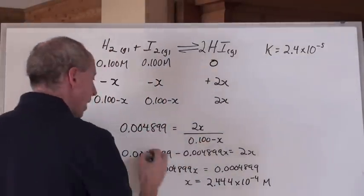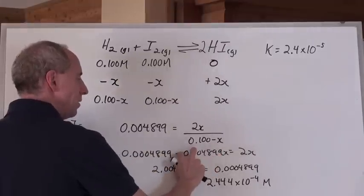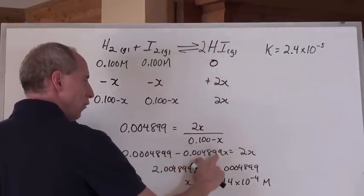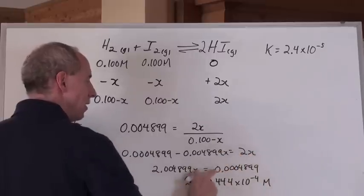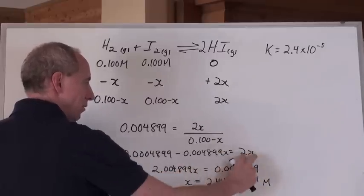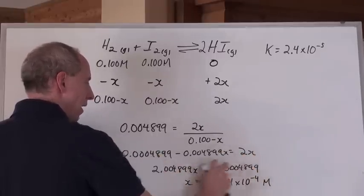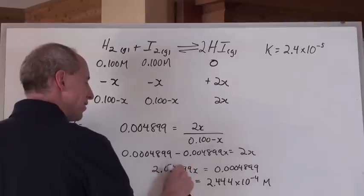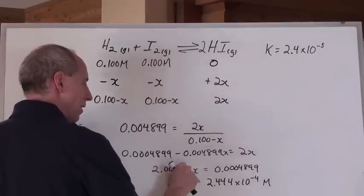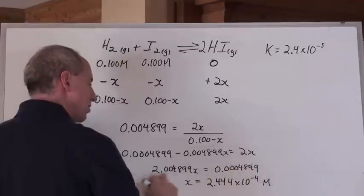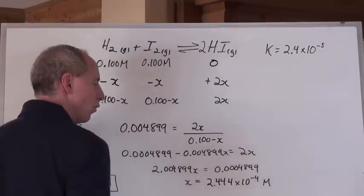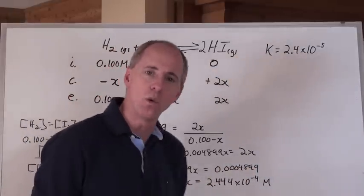And then now I'm going to add 0.004899x to each side, and I'm going to get that there, and that's that. And then I'm going to divide each side by this number here, 2.004899, into each side. And then I'm going to get x equal to 2.444 times 10 to the negative 4.